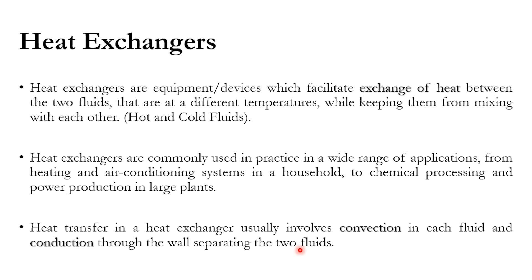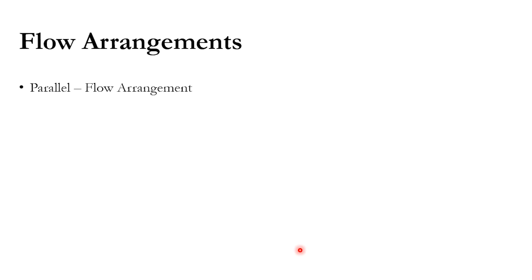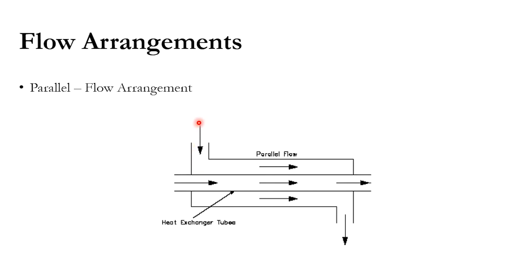There are three common flow arrangements in heat exchangers. The first is the parallel flow (co-current) arrangement, where both the hot and cold fluids enter from the same side. In this arrangement, the heat transfer rate is generally low, and co-current flow is the least preferred arrangement in industry due to various disadvantages.